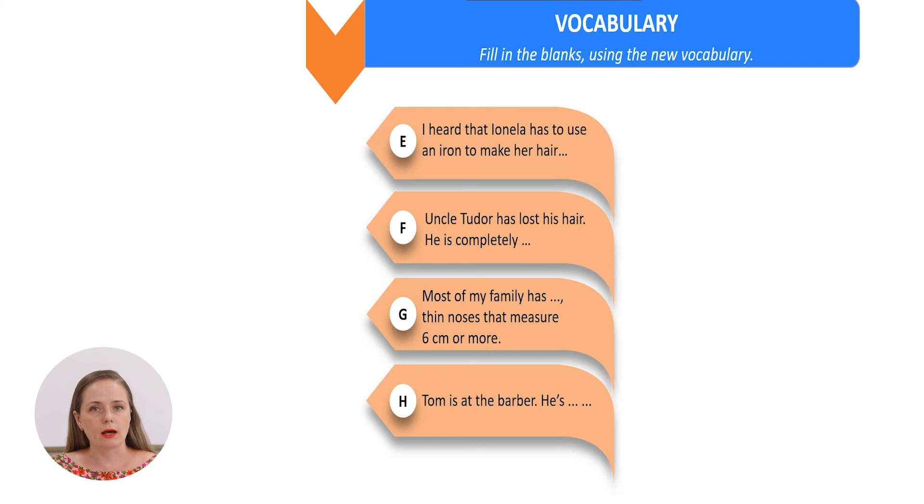The next series of sentences. I heard that Ionella has to use an iron to make her hair... Uncle Tudor has lost his hair. He is completely... Most of my family has thin noses that measure six centimeters or more. Tom is at the barber. He is... Let's see the answers.